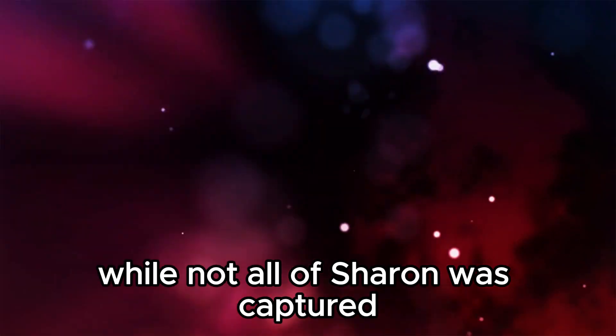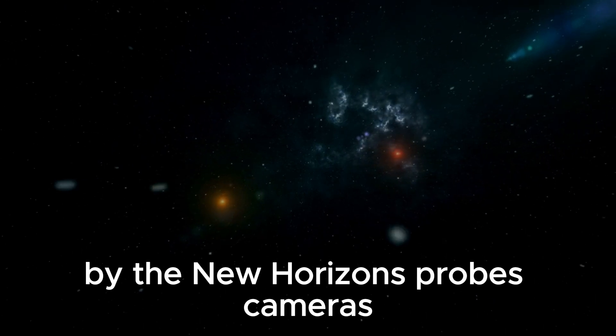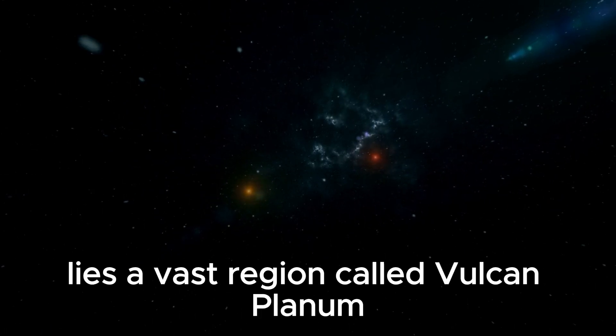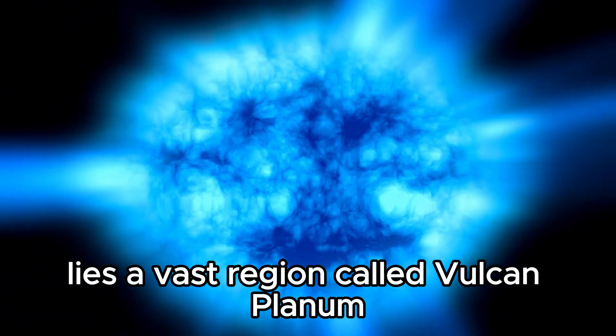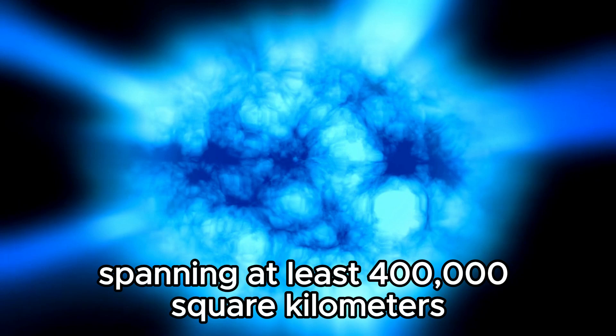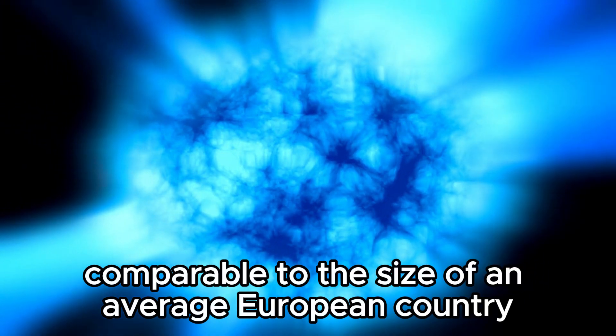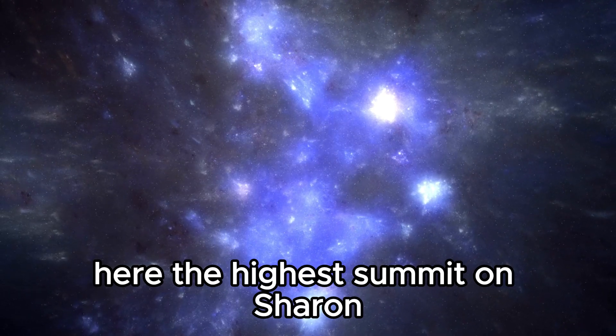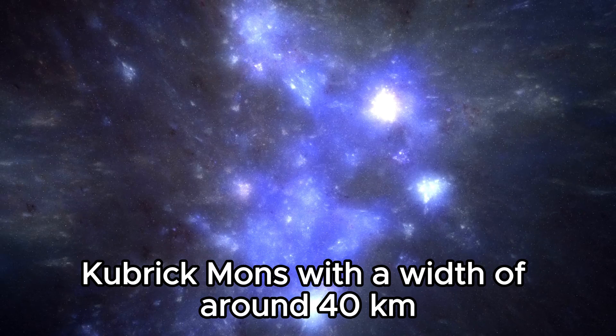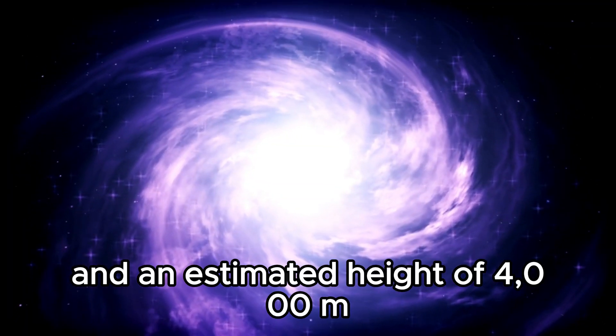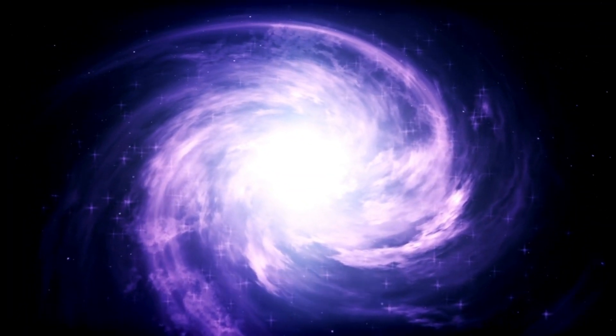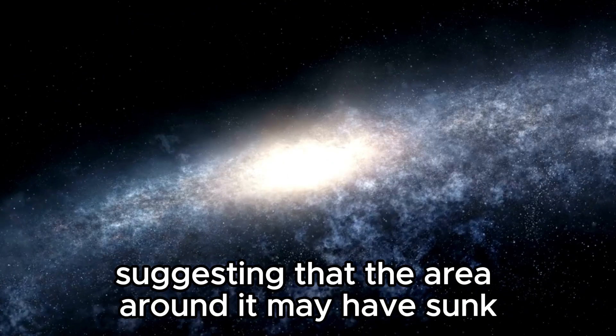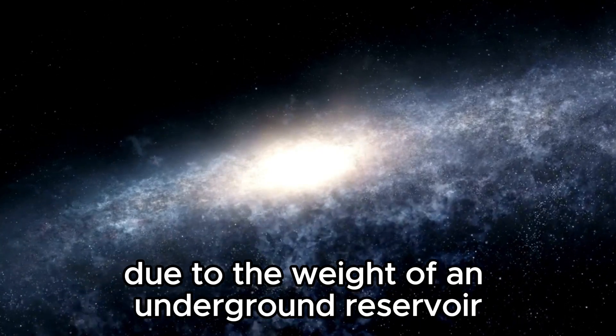While not all of Charon was captured by the New Horizons probe's cameras, the visible surface reveals intriguing features. Toward the south of the equator lies a vast region called Vulcan Planum, spanning at least 400,000 square kilometers, comparable to the size of an average European country. Here, the highest summit on Charon, Kubrick Mons, with a width of around 40 kilometers and an estimated height of 4,000 m, stands out. Some believe Kubrick Mons might be a cryovolcano, suggesting that the area around it may have sunk due to the weight of an underground reservoir.